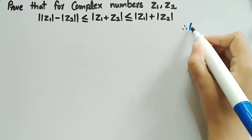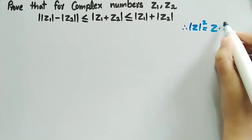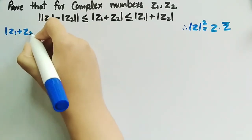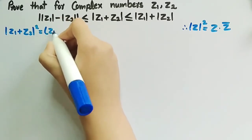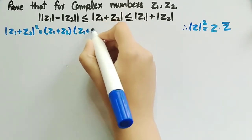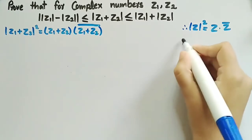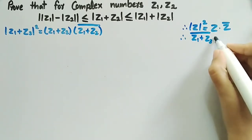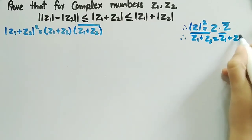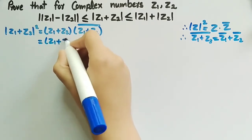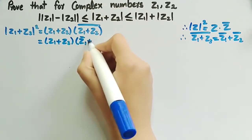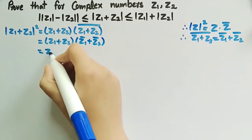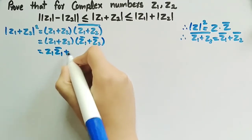From the properties of complex numbers we know that mod of z squared is equal to z times z conjugate. So we can write mod of z1 plus z2 squared equal to z1 plus z2 times the conjugate of z1 plus z2. And from the properties of complex numbers, z1 plus z2 conjugate equals z1 conjugate plus z2 conjugate.